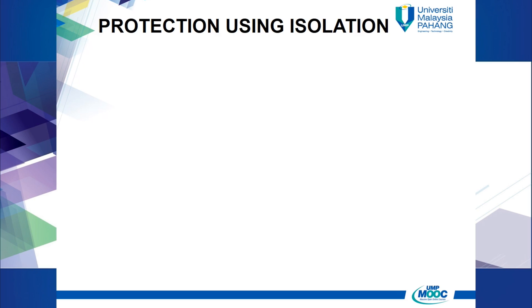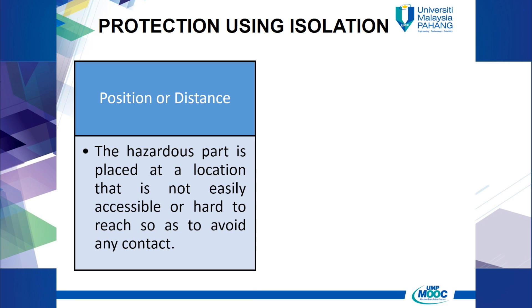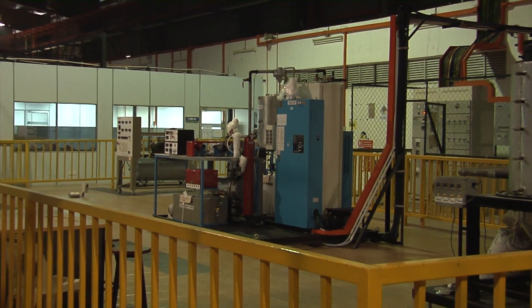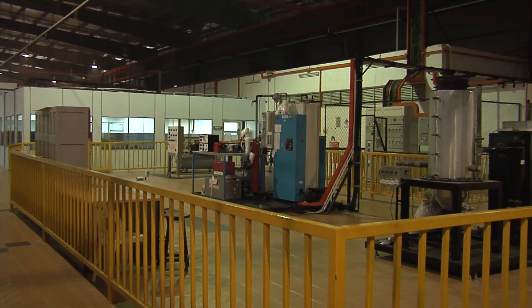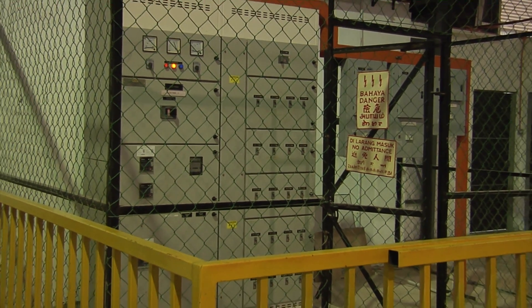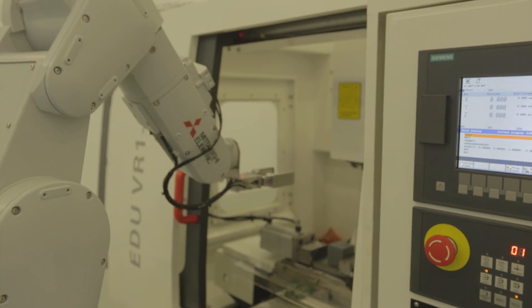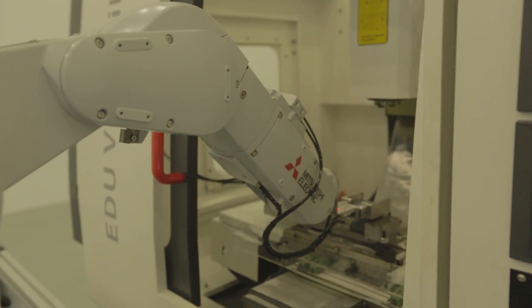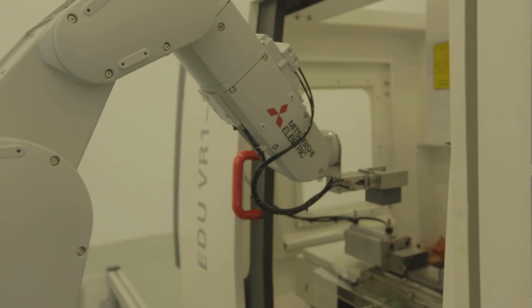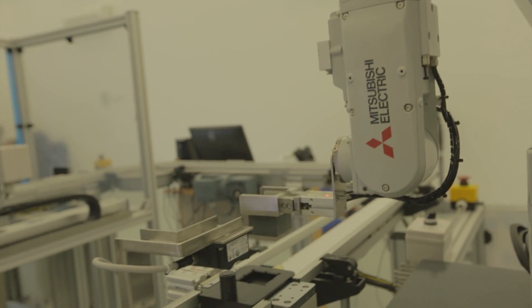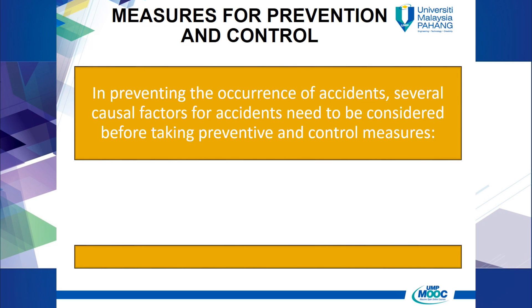For protection using the isolation method, it is based on position or distance and method of feeding or production of materials. For position or distance, the hazardous part is placed at a location that is not easily accessible or hard to reach, so as to avoid any contact. For the method of feeding or production of materials, the machine will use automatic feeding, semi-automatic feeding, automatic production, or robotics.